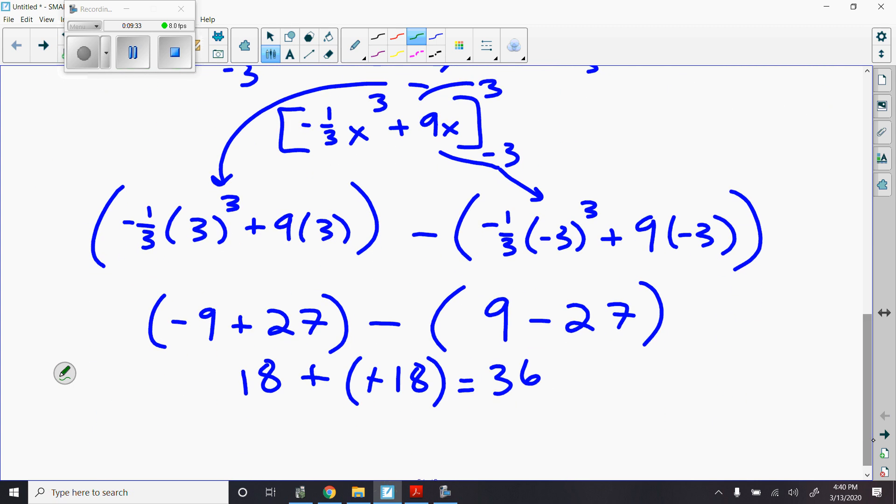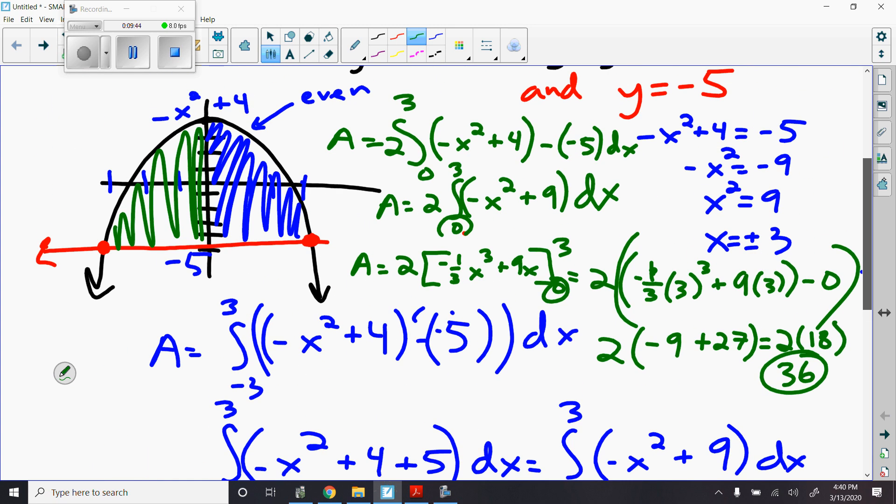As you can see, I get the same answer here, but it was much easier. I could have also found the area of that green region and doubled that as well. I decided to go with the integral 0 to 3 because I like working with positive numbers, rather than the integral from negative 3 to 0. But you can do it either way and double it. But don't forget to double it. Don't just write half of it and report 18 as your answer, because your answer has to be 36.